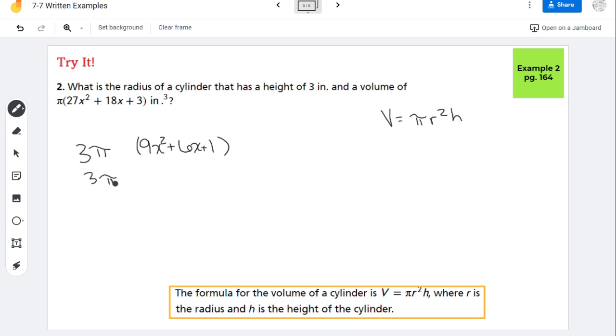So now, this trinomial is following the difference of squares pattern. Because 9x squared is the same thing as 3x squared, 1 is 1 squared. Now, if I take 6 and divide it by 2, I get 3x, and that's the same thing as 3x times 1.